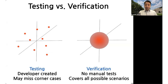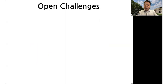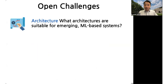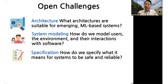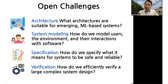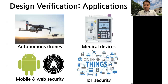There are a number of open research challenges that need to be solved before this approach can be applied more widely. First, what are the right architectures for emerging machine learning-based systems? Second, how do we model users, the environment, and the interaction between users and the software? Next, how do we specify what it actually means for systems to be safe and reliable? And lastly, how do we efficiently verify very large, complex software designs? In our research lab, we are working to solve some of these challenges across application domains including autonomous drones, medical devices, security protocols, and IoT devices.